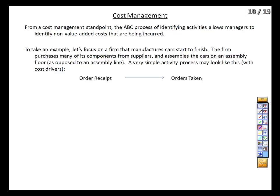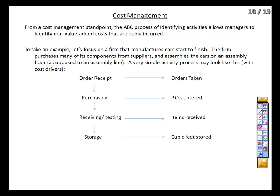So we've got the order, and the purchasing people get set into motion. The cost driver there is the number of purchase orders filled out. Once the stuff is ordered, it comes in and it's tested — each item that comes in needs to get tested, so the more stuff we order, the more testing costs we face. And we put everything in storage, and the more materials we've got, the more it costs to store it. And then finally, we get to the assembly process, where we put together all the components.